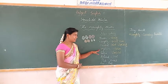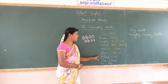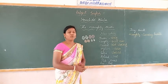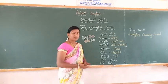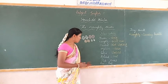Vegetable — 'Tarakari.' Cellar — 'Maruwa.' Vegetable cellar means 'Tarakari Maruwa.'